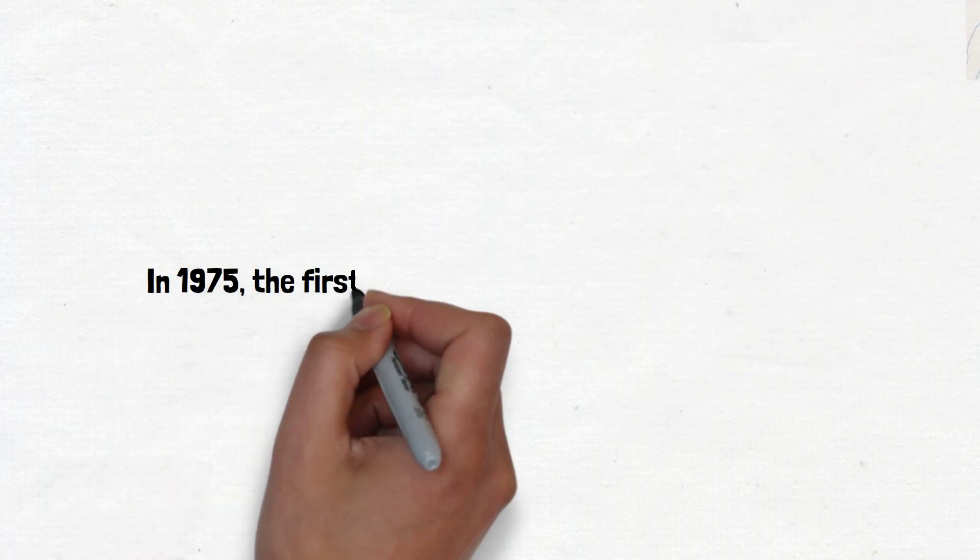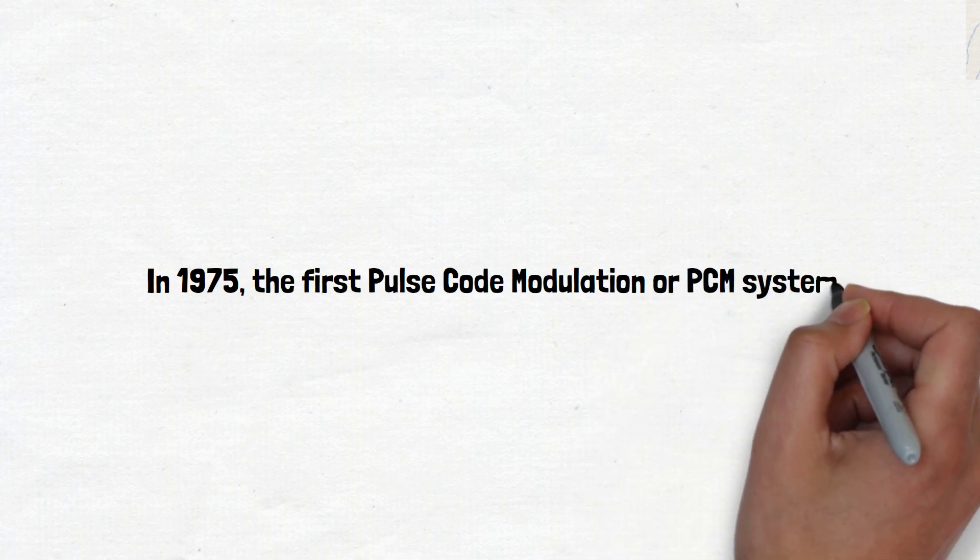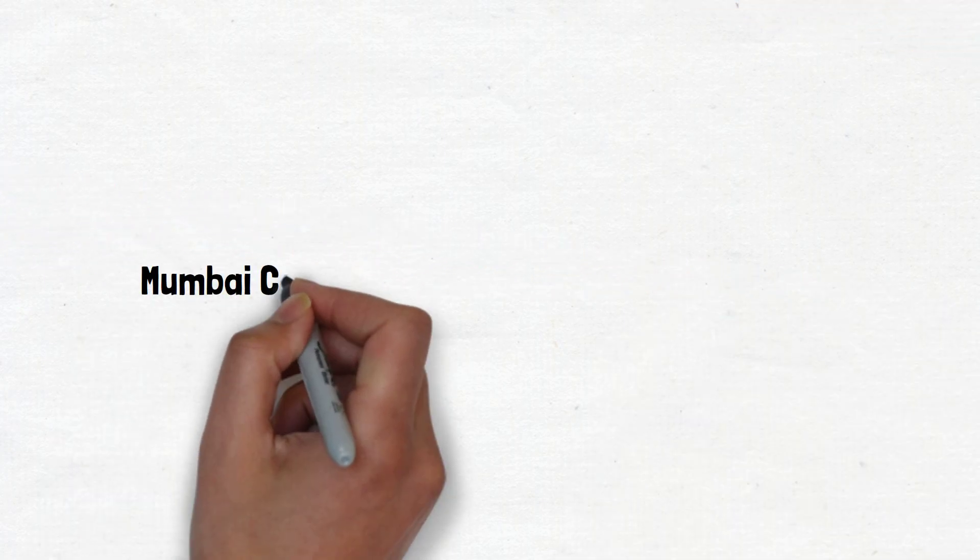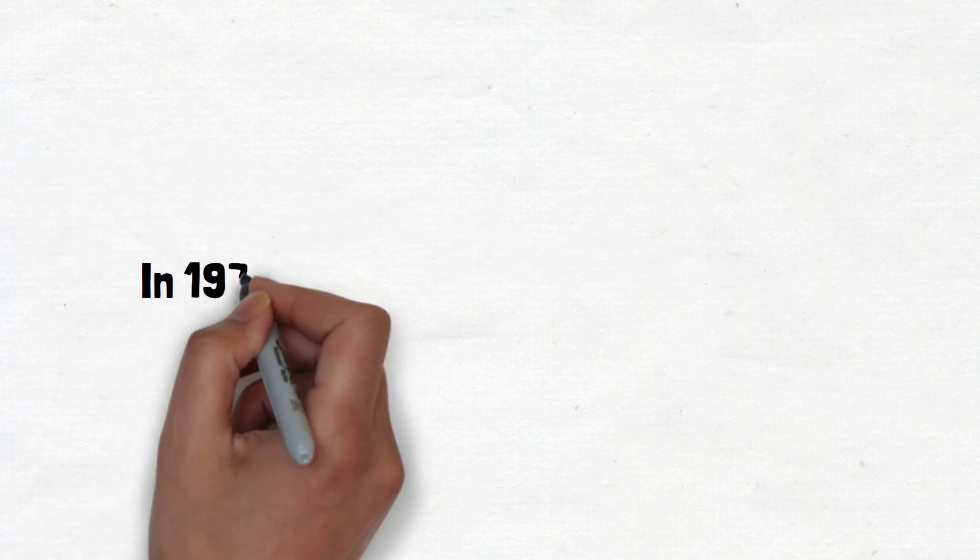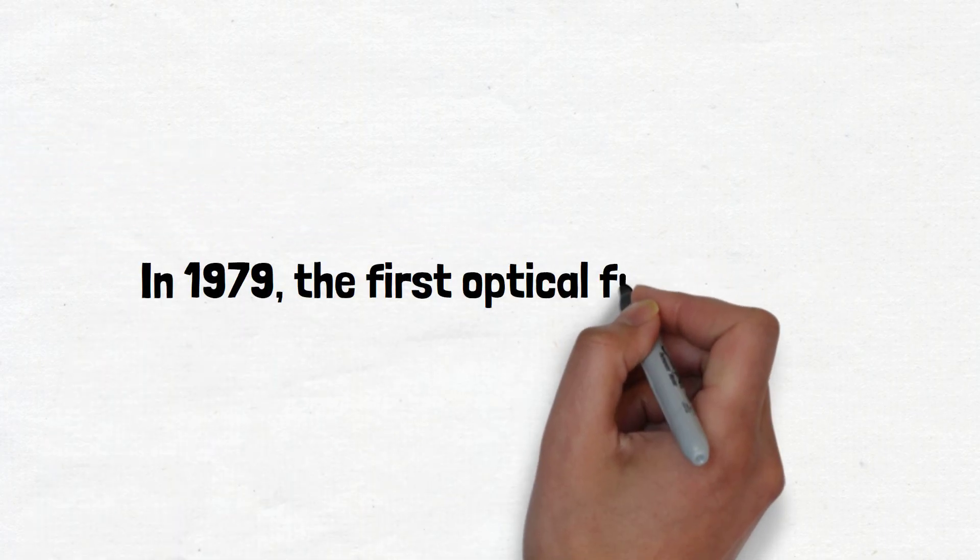In 1975, the first pulse code modulation or PCM system was commissioned between Mumbai City and Inheri telephone exchanges. In 1979, the first optical fiber system for a local junction was commissioned at Pune.